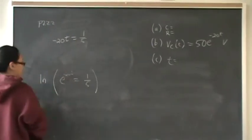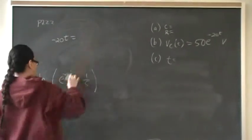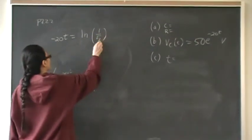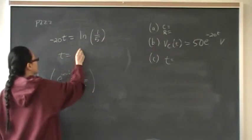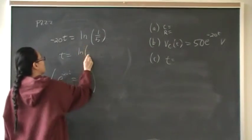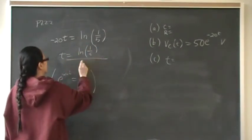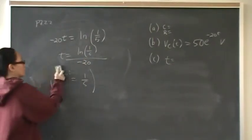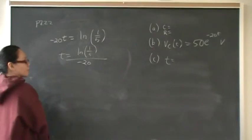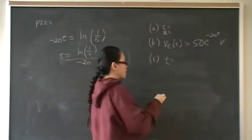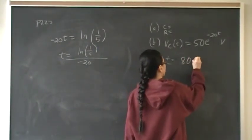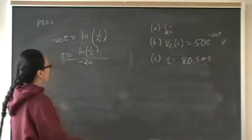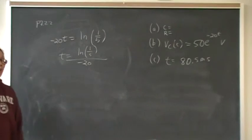That brings the exponent down, which gives me negative 20T is equal to the natural log of 1 fifth. So the T is going to be the natural log of 1 fifth over negative 20. Put that into your calculator. And you should arrive at an answer of 80.5 milliseconds. And that is problem 22.